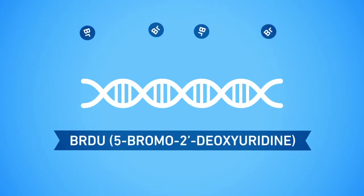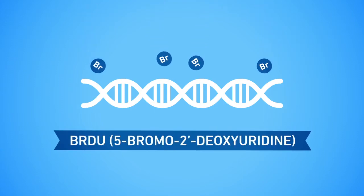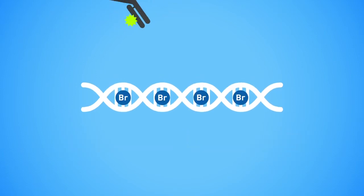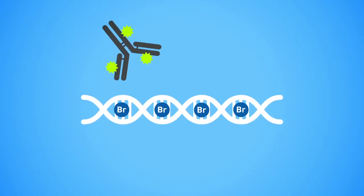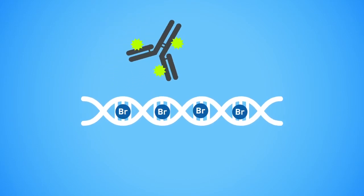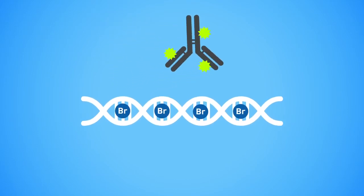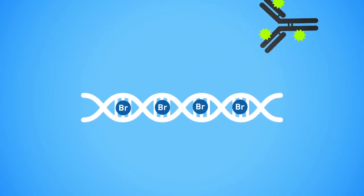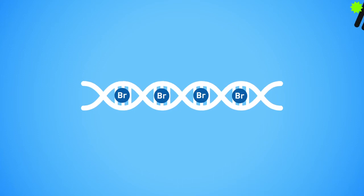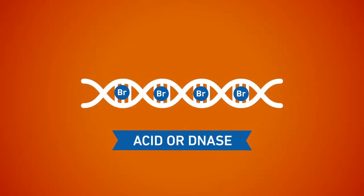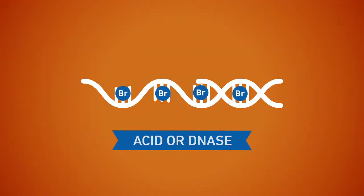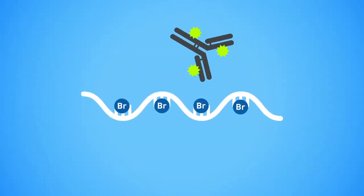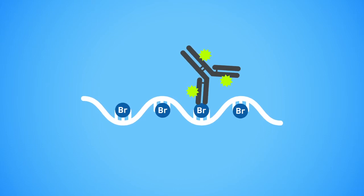The BrdU method utilizes a modified nucleotide that is incorporated into newly synthesized DNA. For detection, an anti-BrdU antibody labeled with a fluorescent dye is used. However, the antibody is unable to bind due to the inaccessibility of the BrdU. To gain access to the BrdU label, the DNA must be denatured. After DNA denaturation, the anti-BrdU antibody can bind to the BrdU.